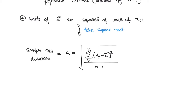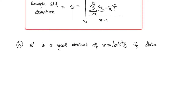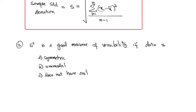Finally, the validity of sample variance as a good measure of variability would depend on the sample mean being a good measure of location. And we know that the conditions under which the sample mean is a good measure of location are the data being symmetric, unimodal, and the non-existence of outliers.